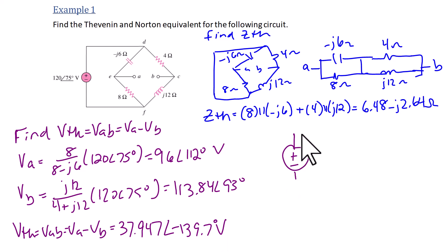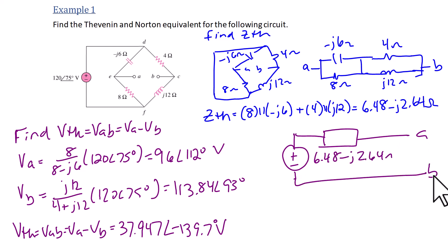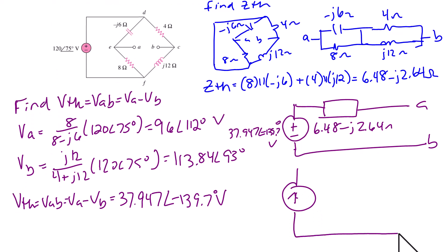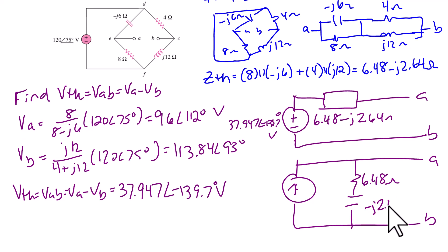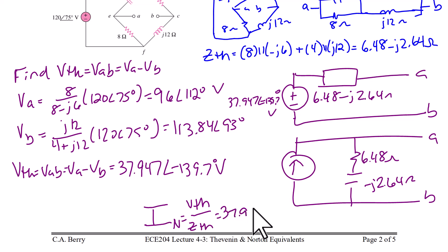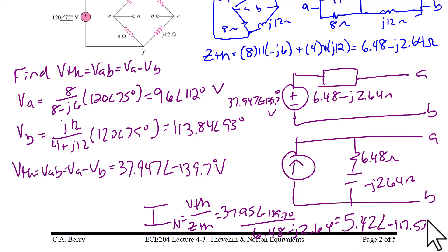The Thevenin equivalent circuit is a voltage source of 37.947 angle negative 139.7 degrees in series with an impedance of 6.48 minus J2.64 ohms. For the Norton equivalent, the current source value is 37.947 angle negative 139.7 degrees divided by 6.48 minus J2.64 ohms, which gives a Norton current of 37.947 angle negative 117.53 degrees.